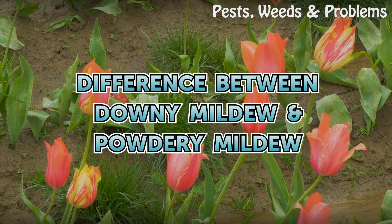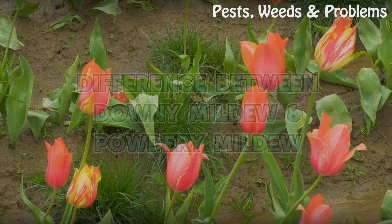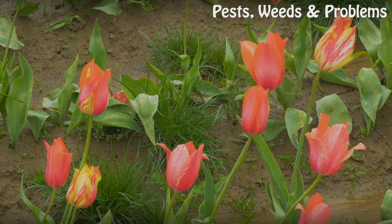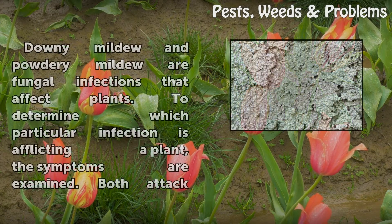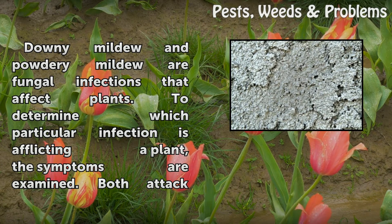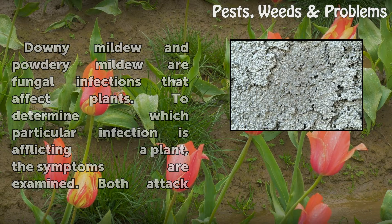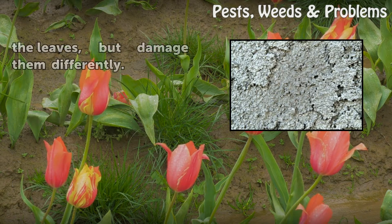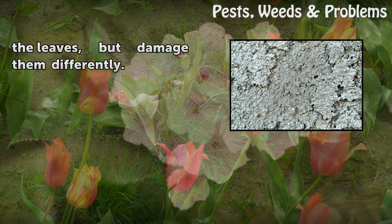Downy mildew and powdery mildew are fungal infections that affect plants. To determine which particular infection is afflicting a plant, the symptoms are examined. Both attack the leaves but damage them differently.